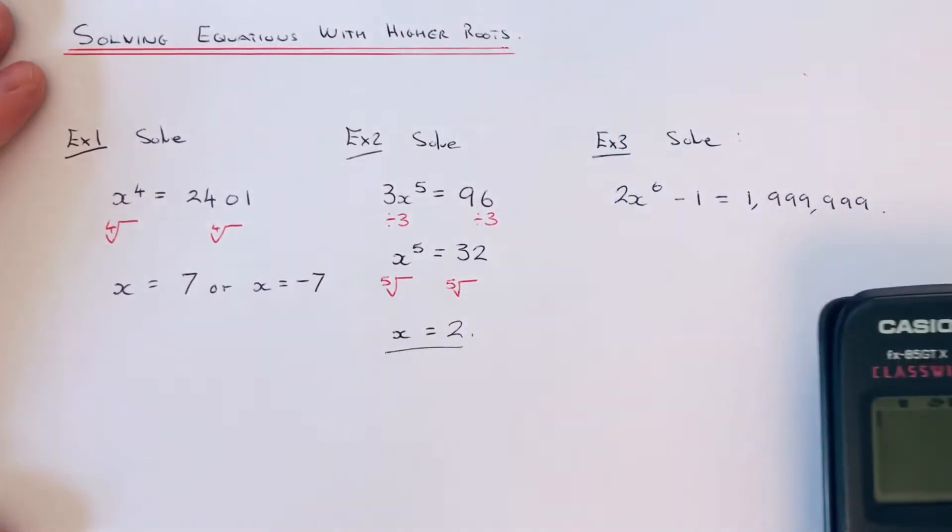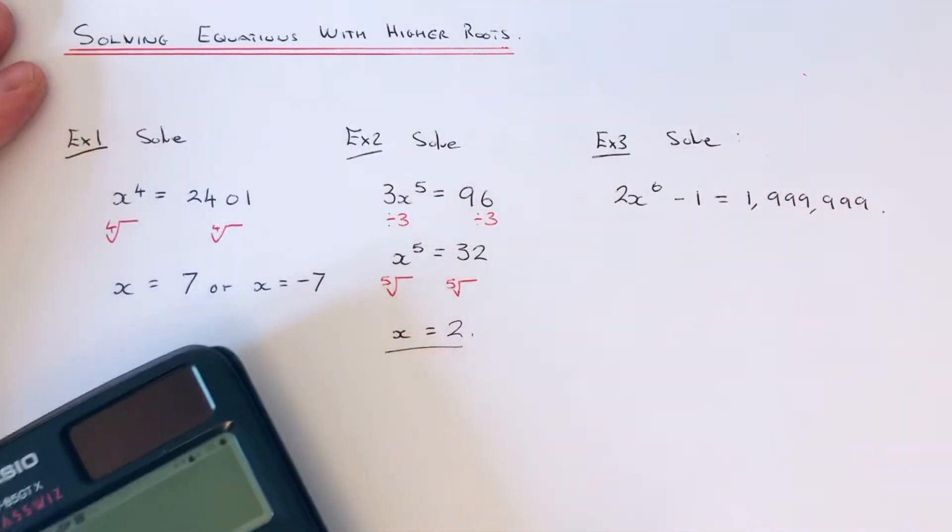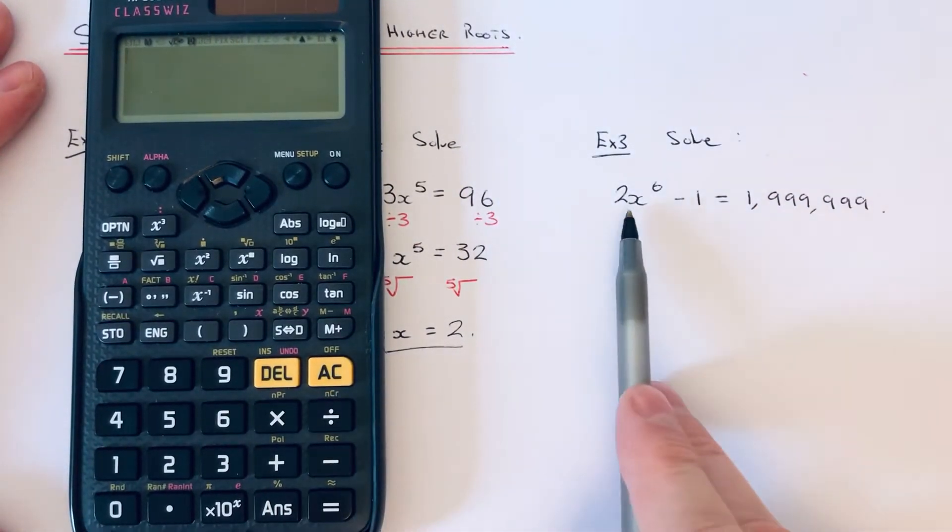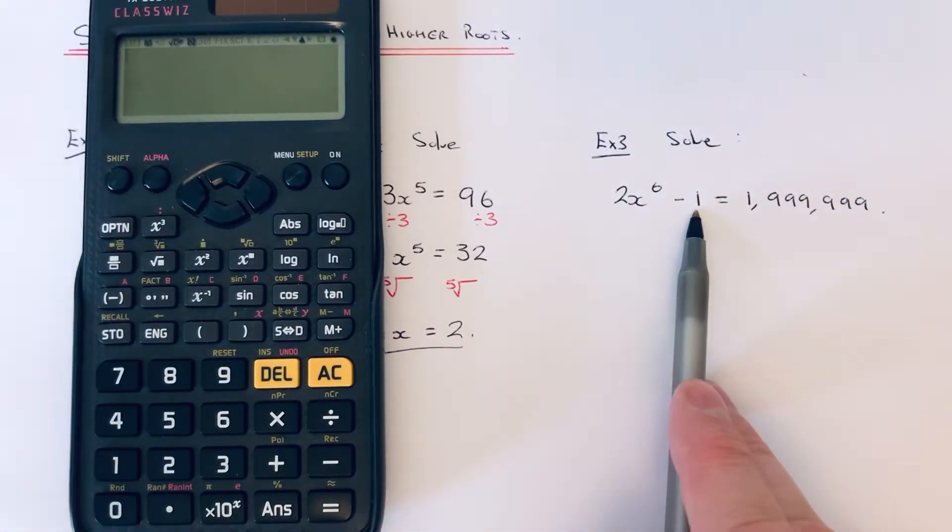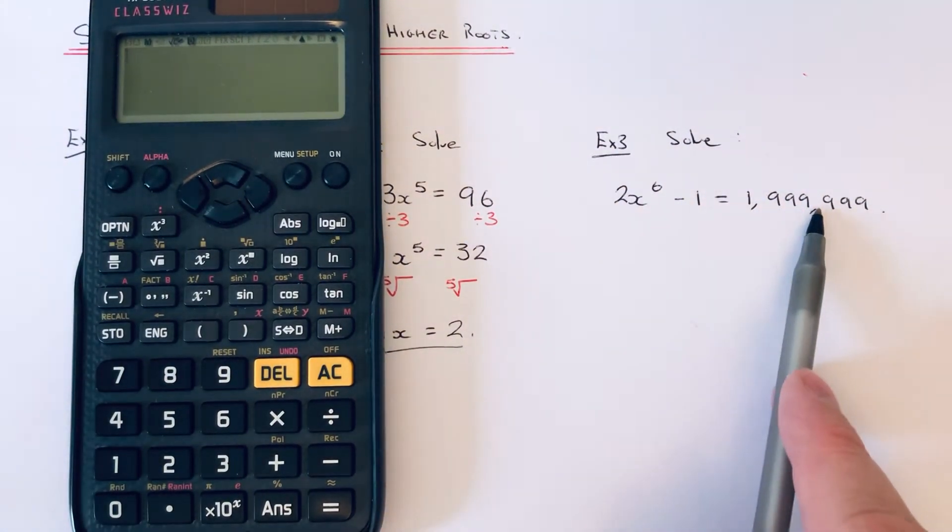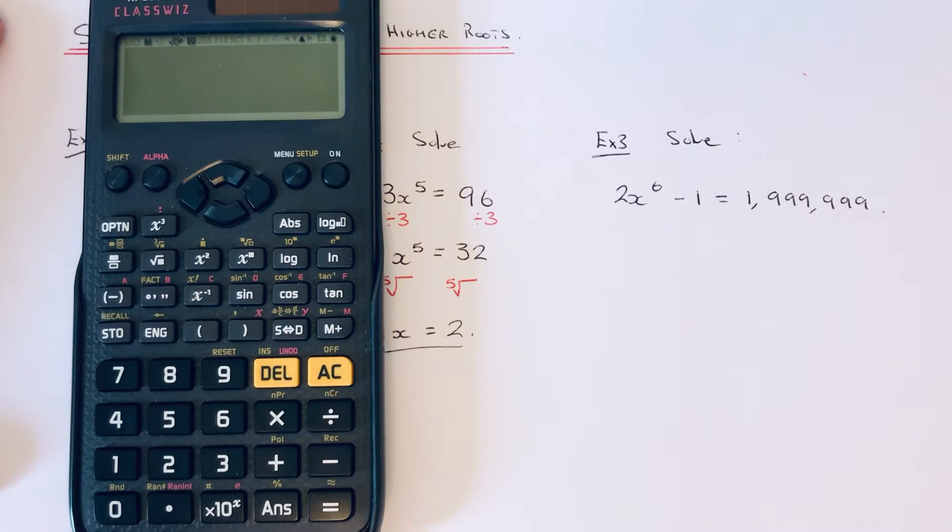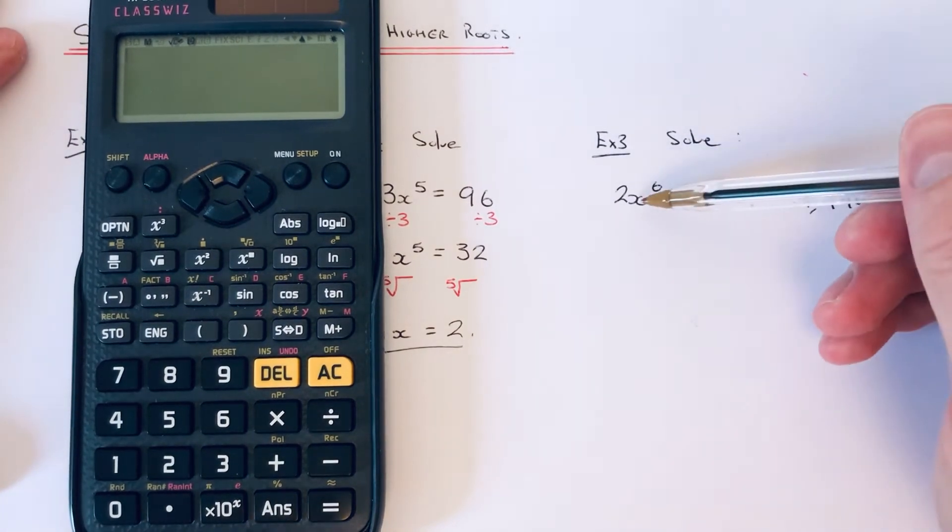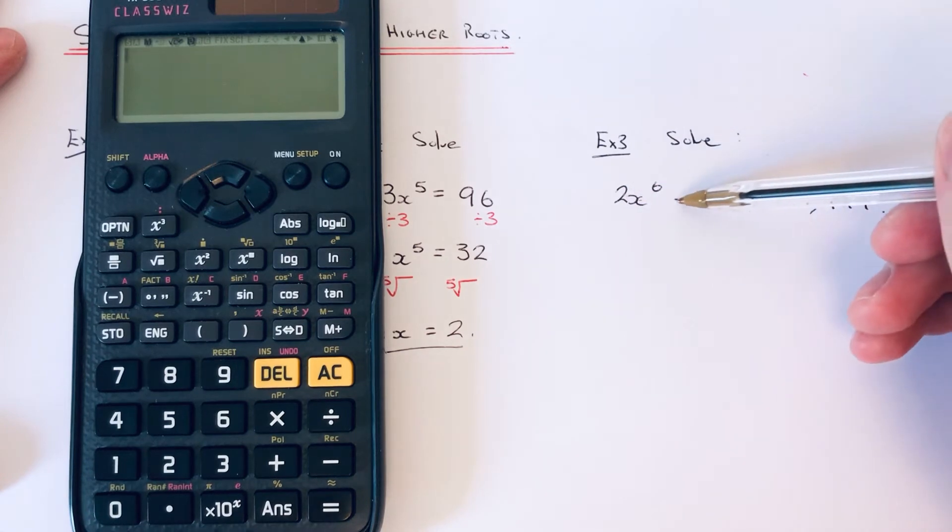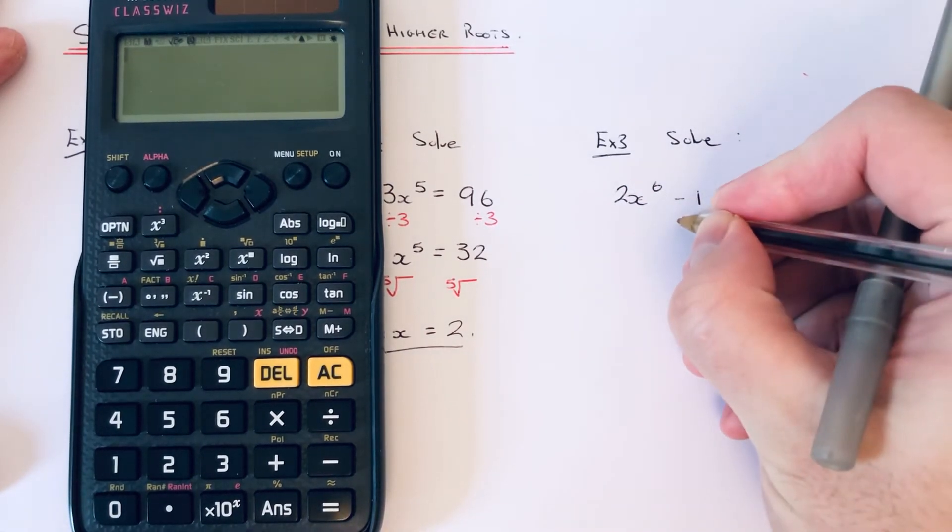Let's have a look at our third example. This time we've got 2x to the power of 6 take away 1 equals 1,999,999. So x has been raised to the power of 6, multiplied by 2, and then we take away 1. If we get rid of the minus 1 first by adding 1 to both sides...